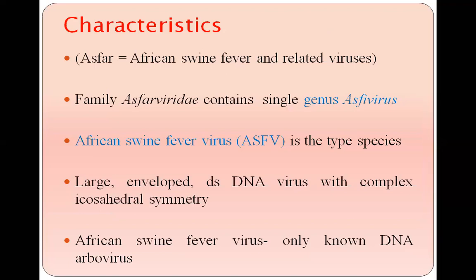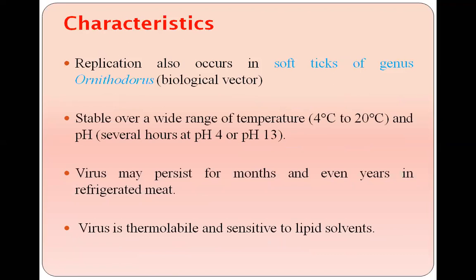It is a large enveloped double-stranded DNA virus with complex icosahedral symmetry, and it is the only DNA virus which is an arbovirus — meaning a virus transmitted through arthropods. Its replication also occurs in soft ticks of the genus Ornithodorus, which is the biological vector. It is a thermolabile virus, sensitive to lipid solvents, stable at 4–20°C, and stable at pH 4 or pH 13 for several hours.